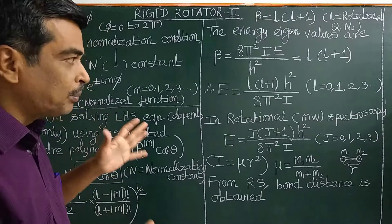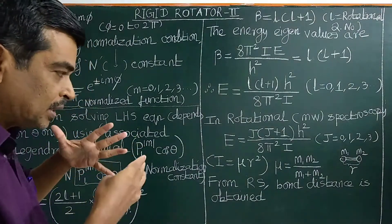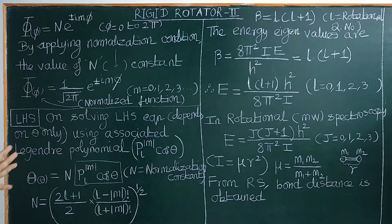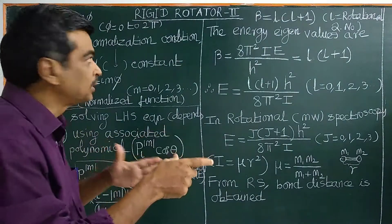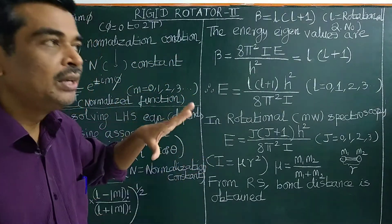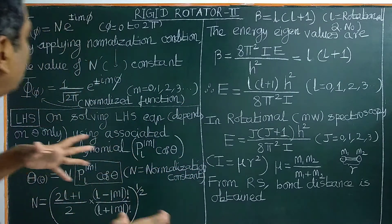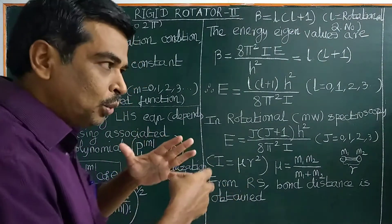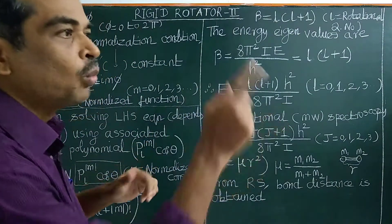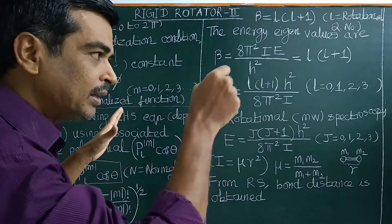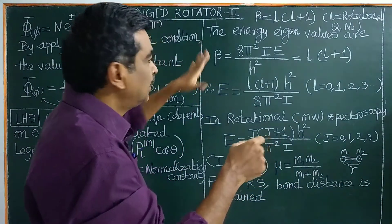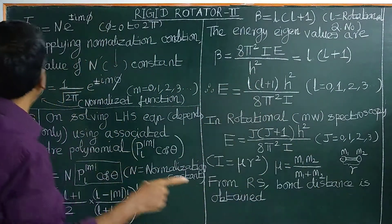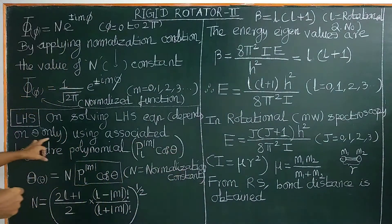We separated the Schrödinger wave equation into two equations, each depending on only one variable. The right-hand side depends only on phi, and the left-hand side depends only on theta.